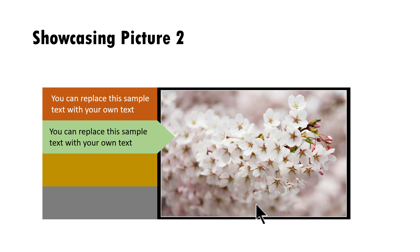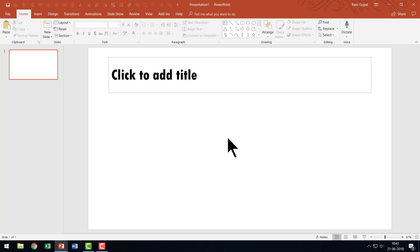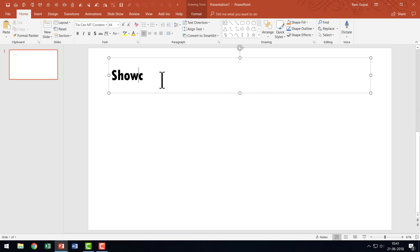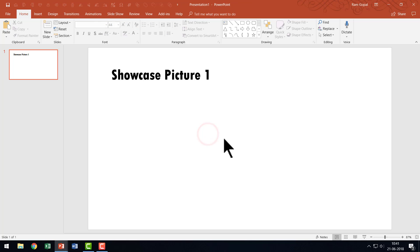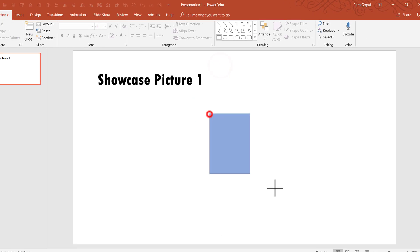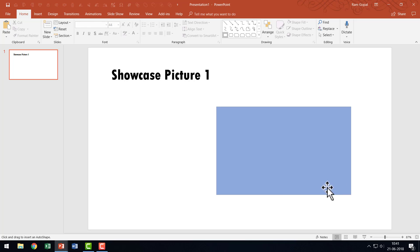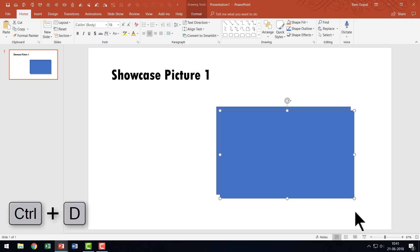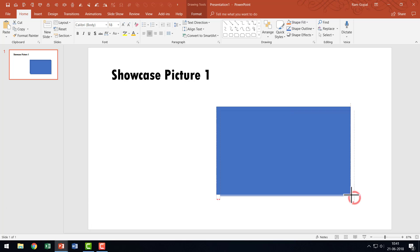And all this can be done so effortlessly using a simple morph transition. I'll show you how to achieve this effect from scratch by going to a new presentation. Here I am on a new slide in a new presentation. Let me call this 'Showcase Picture 1.' I'm going to have a picture placeholder, so let me go to the auto shapes gallery. First, I'm going to use a simple rectangle like this and I'm going to make another copy of this by pressing Control D. I'm going to hold the shift button down as I reduce the size of this rectangle.